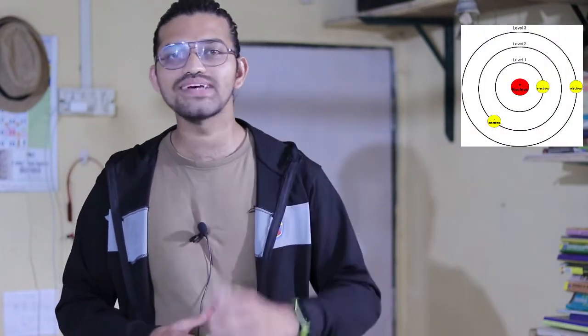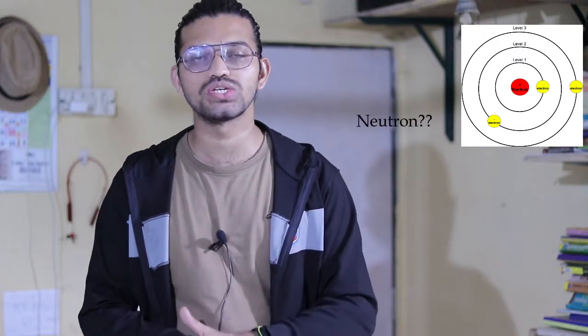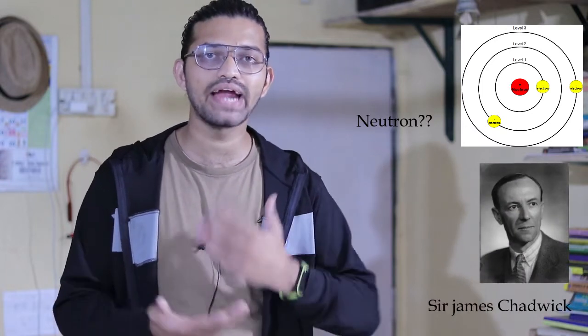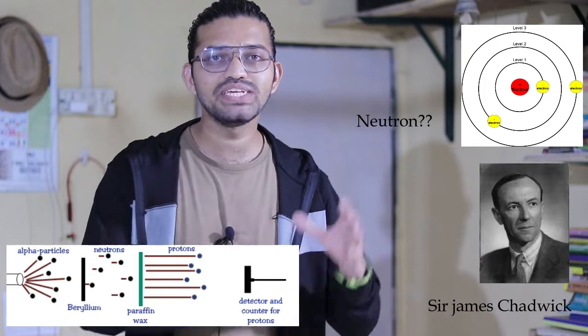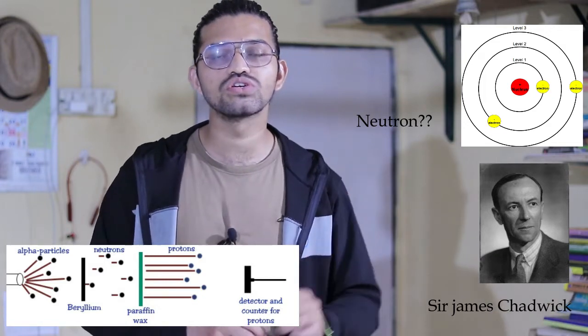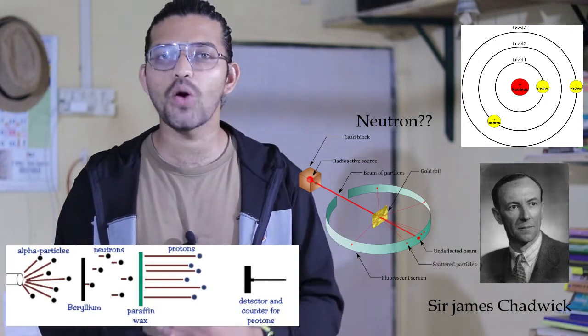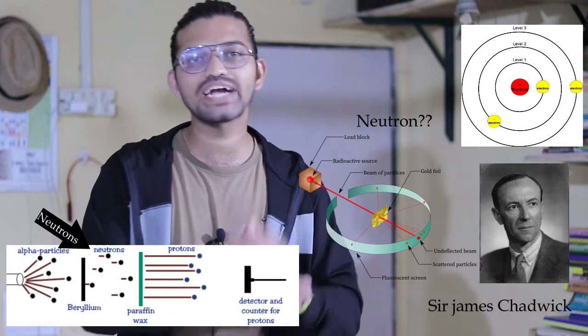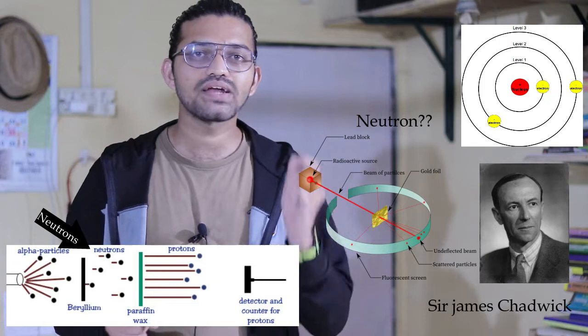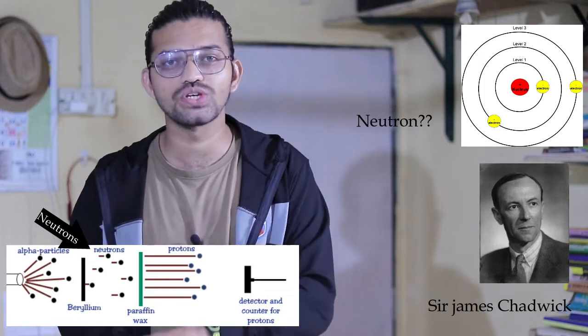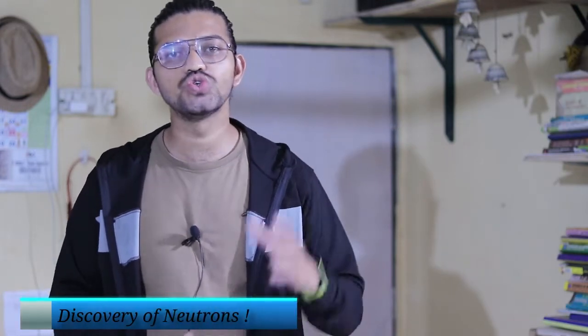Over here we have a structure of the atom which looks like this. Only one subatomic particle is left which is known as the neutron. In the year 1932, Sir James Chadwick conducted a scattering experiment very similar to Rutherford's gold foil experiment. He found that in the nuclei there is another subatomic particle having the exact mass, shape, and size as that of the proton, which is known as the neutron. In this video we are going to talk about neutrons.